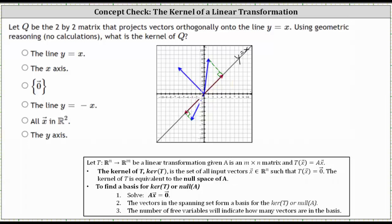For example, if we consider the vector (1, 8), graphed here in blue, and this is orthogonally projected onto the line y equals x, the output vector or the image is this red vector here. But we're looking for the set of input vectors where the output vector is the zero vector — notice in this case we do not get the zero vector.